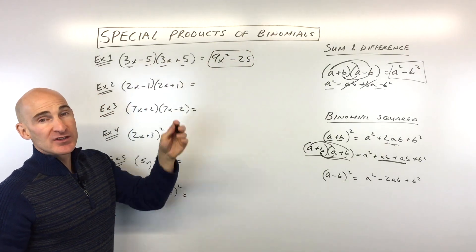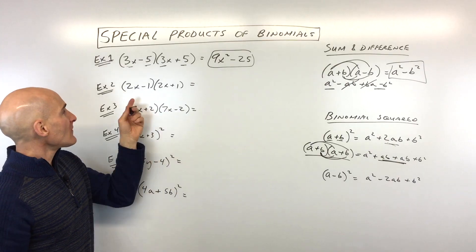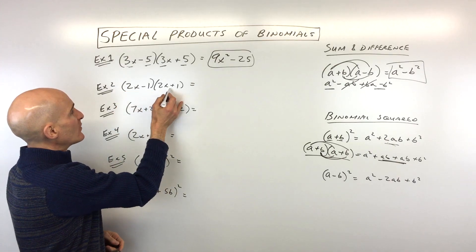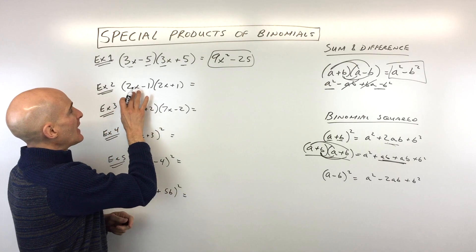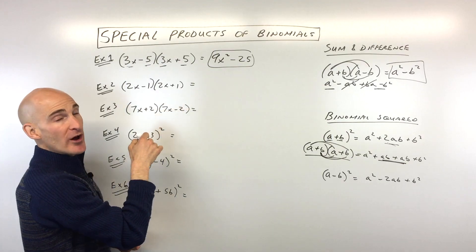Of course, you can FOIL it out, but this is just a time saver. So let's look at example number two. This one again, we've got a sum and difference pattern. a and b are the same, 2x and 1.